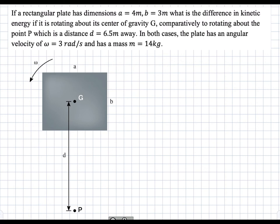In this problem, we have a rotating rectangular plate, and we're asked to find the difference in kinetic energy between when it's rotating around its center of gravity compared to when it's rotating about a point P, which is a distance d away from the center of gravity, rotating at the same angular frequency of three radians per second.